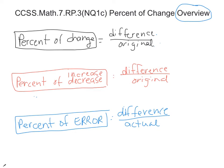So you're going to take the difference of the two prices over the original, and then you will divide. So that's your percent.